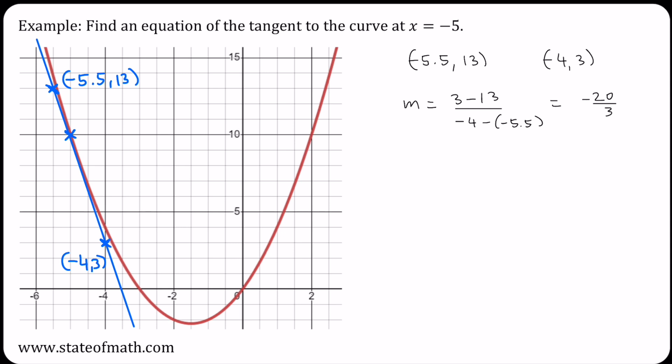We've got the gradient of this straight line. We know that any straight line has a general equation of the form y equals mx plus c, and we have already established that m is minus 20 over 3.